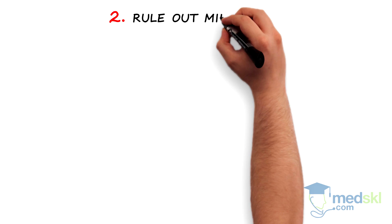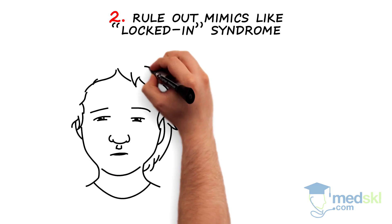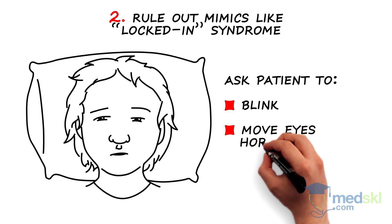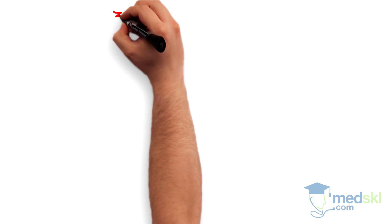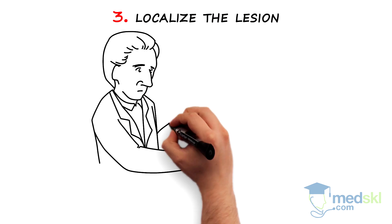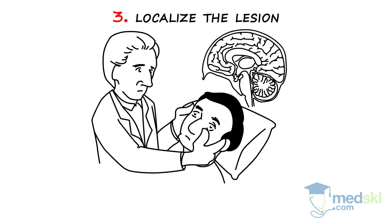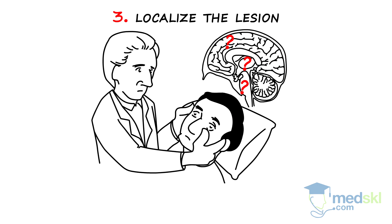Rule out mimics. Make sure the patient does not have locked-in syndrome by asking her to blink and move her eyes horizontally and vertically. Try to localize the lesion through the history and examination. Is there evidence of involvement of the bilateral cerebral hemispheres, the thalamus, or the brainstem? Examine for the response to pain and the brainstem reflexes.